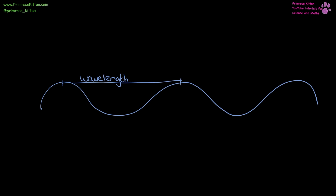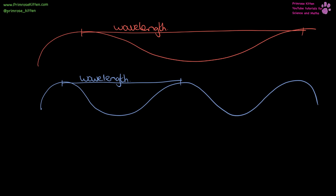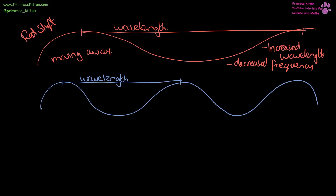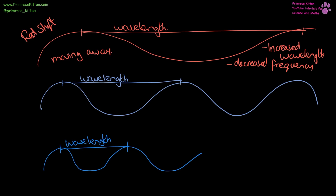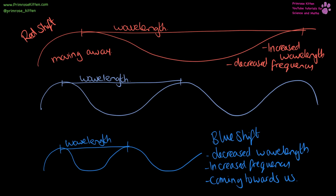When we look at stars, we can see light coming from them, and the wavelength of light can tell us things about them. If the wavelength has increased and the frequency has decreased, the wave is being stretched out — it is moving away from us. When the wavelength is increased, the light from these stars is going to look red; we call this red shift. Sometimes the light coming from stars might look a bit blue — when the wave is being squashed, it has a decreased wavelength and increased frequency, meaning the star is coming towards us. This is blue shift.